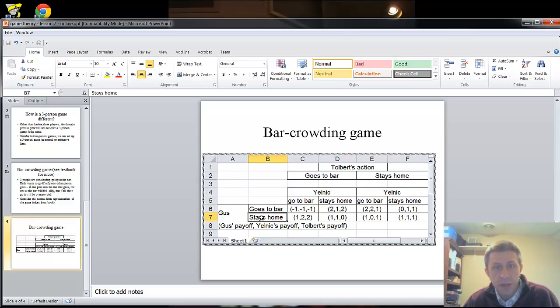So you'll notice here, at this outcome, Gus stays home. Both Jelnick goes to the bar and Tolbert goes to the bar. So what should the payoffs be intuitively? Well remember, you stay home, you get a payoff of one. Watch television, you don't have to spend the money at a bar or whatever. You're doing your game theory homework, right? What's more fun than that? So you stay home, you get a payoff of one. But if you can get to the bar with one other person, you get a payoff of two. So here, Gus is staying home, gets the payoff of one. Jelnick and Tolbert each get a payoff of two. So one, two, two.